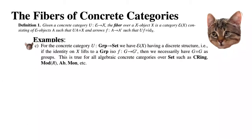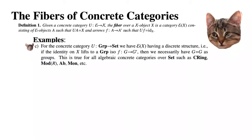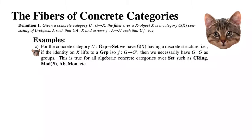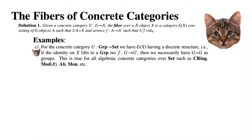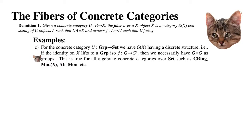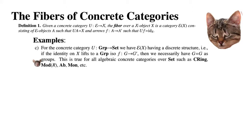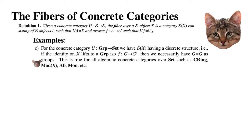For the concrete category of groups over Set, the fiber over a set X has a discrete structure — that is, if the identity on X lifts to a group isomorphism F: G → G', then we necessarily have G equal to G' as groups. This is true for all algebraic concrete categories over sets, such as commutative rings, modules over a ring R, abelian groups, monoids, or any other type of algebraic concrete category.